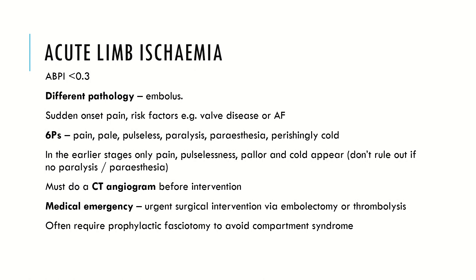A CT angiogram must be done as rapidly as possible to locate the embolus before any intervention, as this is a medical emergency. Surgical intervention via embolectomy or thrombolysis is needed rapidly to address the complete arterial blockage causing ischemia and necrosis downstream. Patients often require prophylactic fasciotomy: the fascia surrounding calf tissues can't expand, so when tissues are reperfused after embolectomy, they swell and inflammatory markers leak into the bloodstream. With nowhere to expand, compartment syndrome can develop. A fasciotomy cuts the fascia to allow room for expansion and is often left open for a couple of days post-surgery.